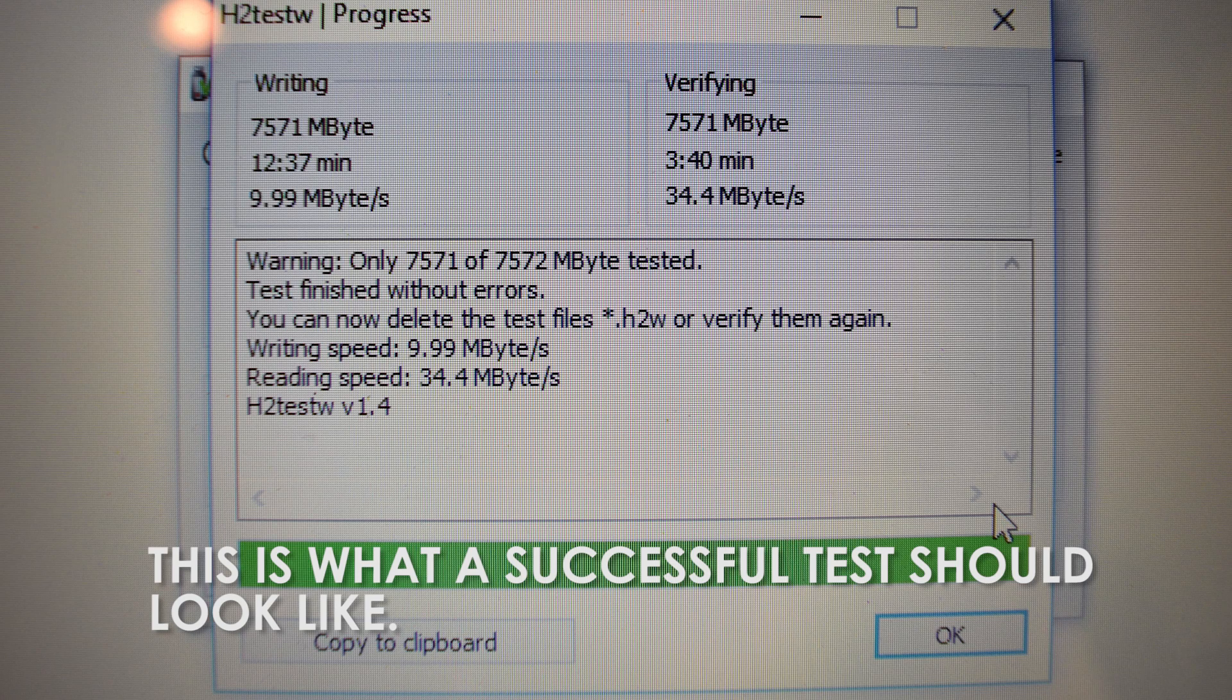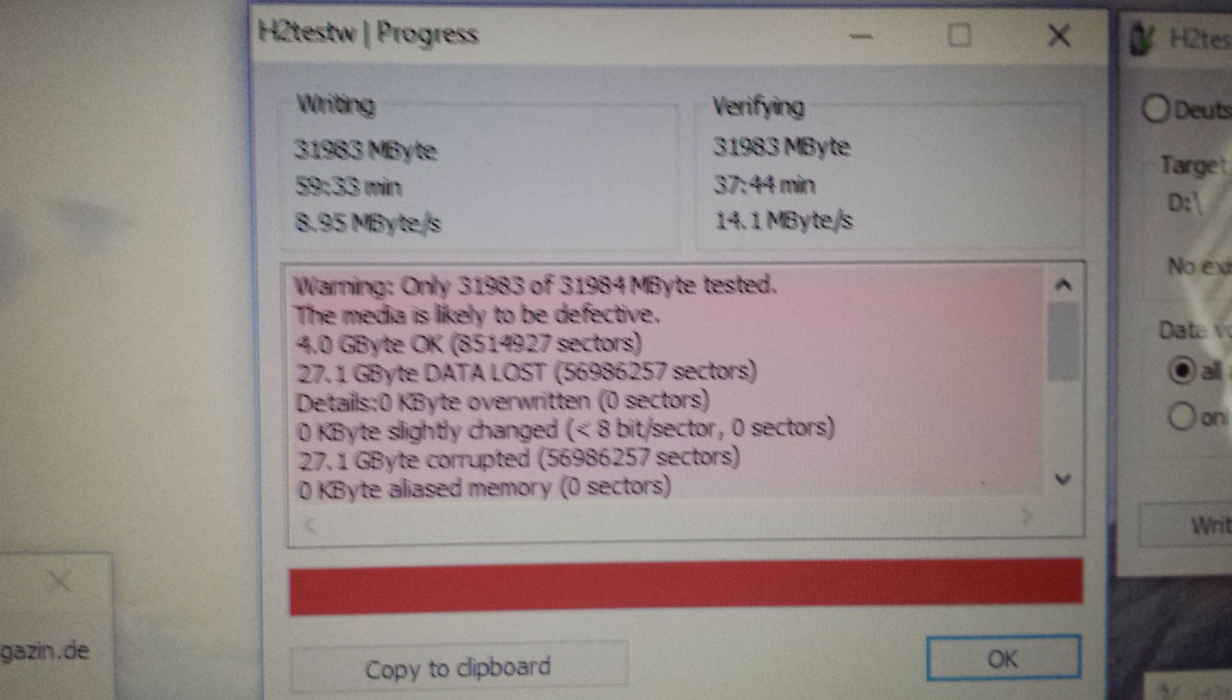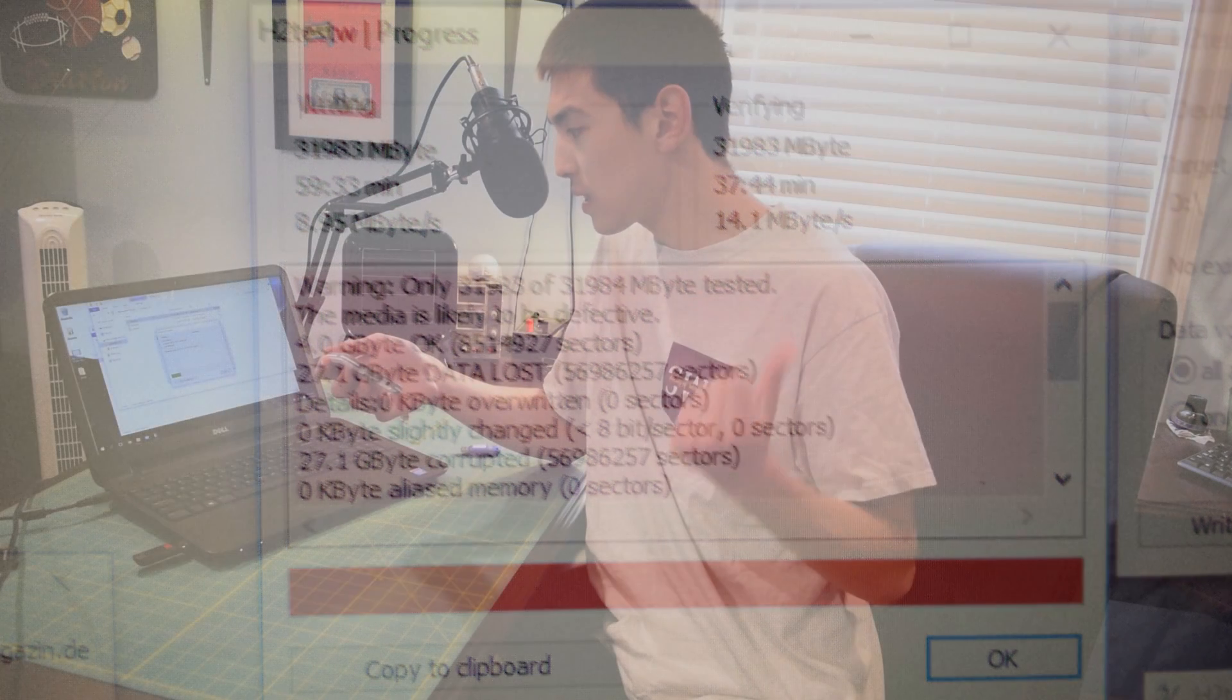So what I found with this drive is that 27.1 gigabytes of the data that we put on there ended up being corrupted. So only four gigabytes of the data actually remained intact. So therefore, this is a four gigabyte micro SD card. Now, of course, I'm going to throw up the H2 test W data up on the screen so you guys can actually take a look at that. I verified this using my desktop as well. Got the same results. And as far as I can conclude, this micro SD card is only four gigabytes and I got completely gypped.